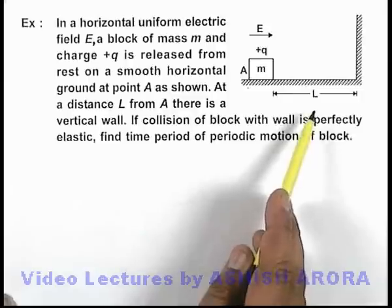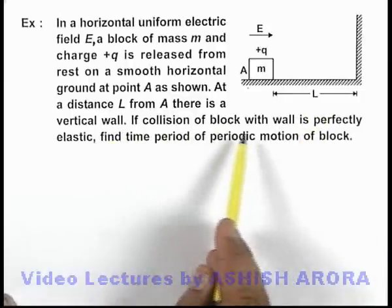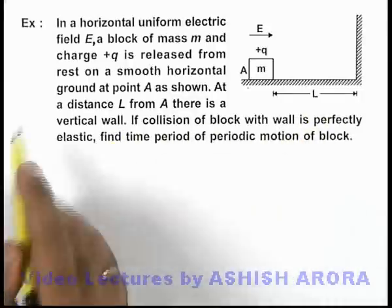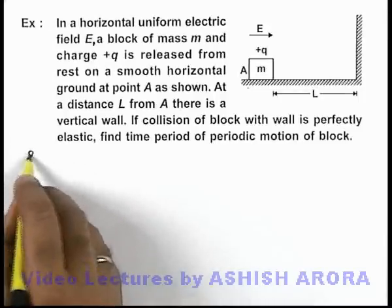At a distance L from A there is a vertical wall. If the collision of block with the wall is perfectly elastic, we are required to find the time period of periodic motion of this block.